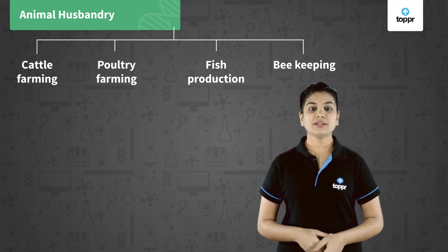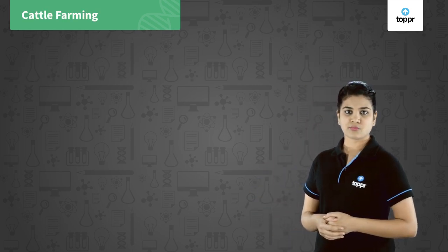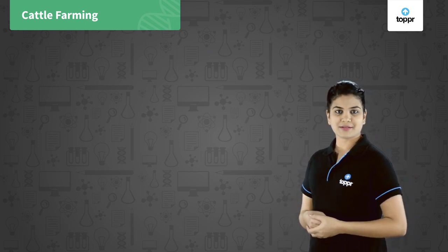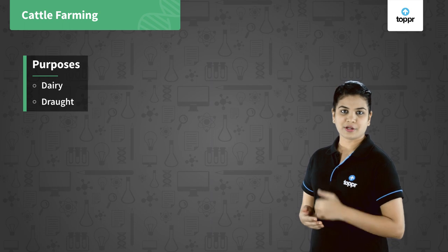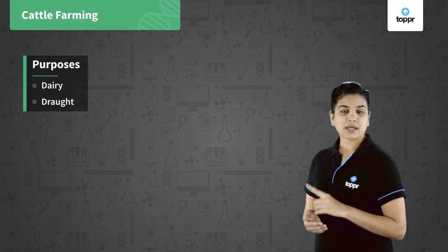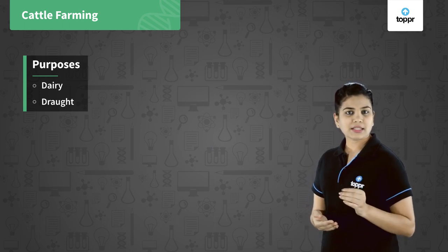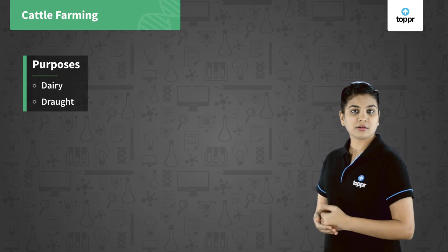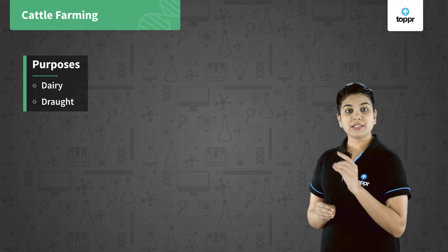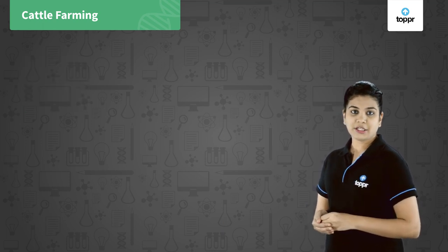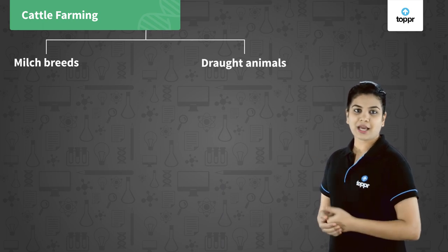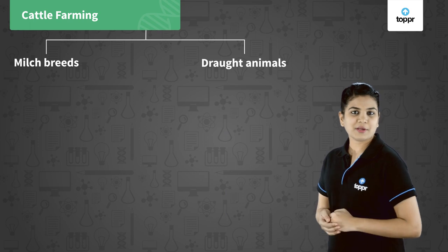Let's begin with cattle farming. Cattle farming is done majorly for two purposes: dairy and drought. Dairy is for milk production, and drought is for animals which are used in agricultural tasks like plowing, irrigation, and carting. On the basis of these purposes, cattle are divided majorly into two categories: milch breeds and drought animals.